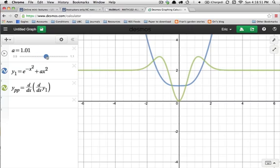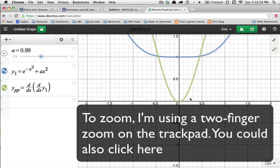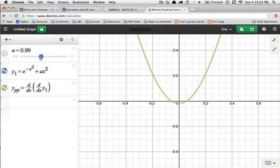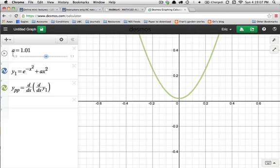And so you can see here that around 1 and 0.99 and 1.01, it seems like we are close to losing our two inflection points. So if you continue refining the interval of a and zooming in on the graph, you should be able to refine the value of a at which these disappear more and more, but it looks like one is a likely candidate.